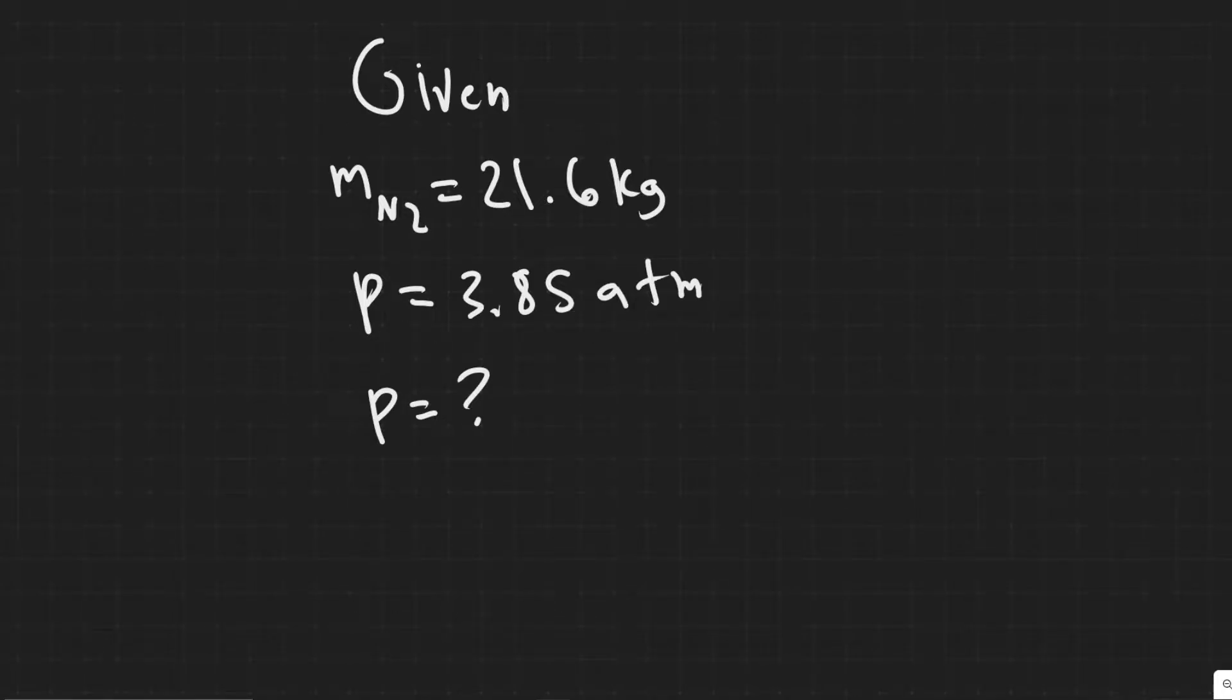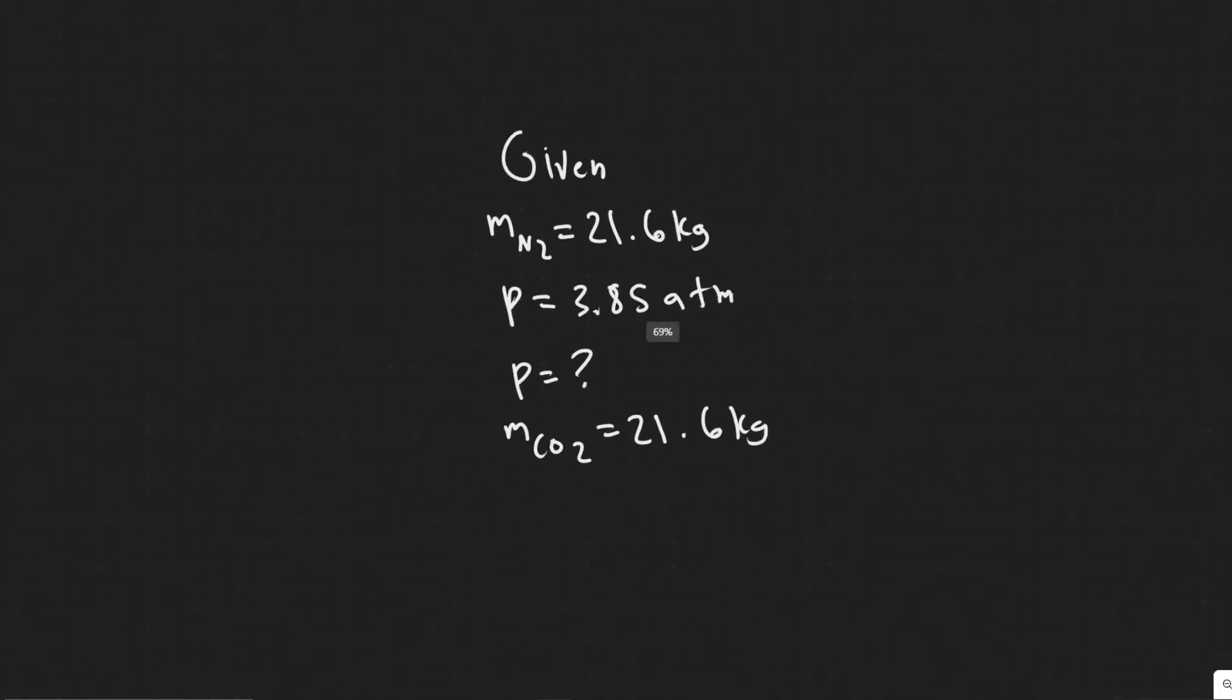If the nitrogen is going to be replaced with a new equal mass, so 21.6 kg of CO2. We know we're going to be replacing it with a mass of CO2 of the same thing, 21.6 kg.